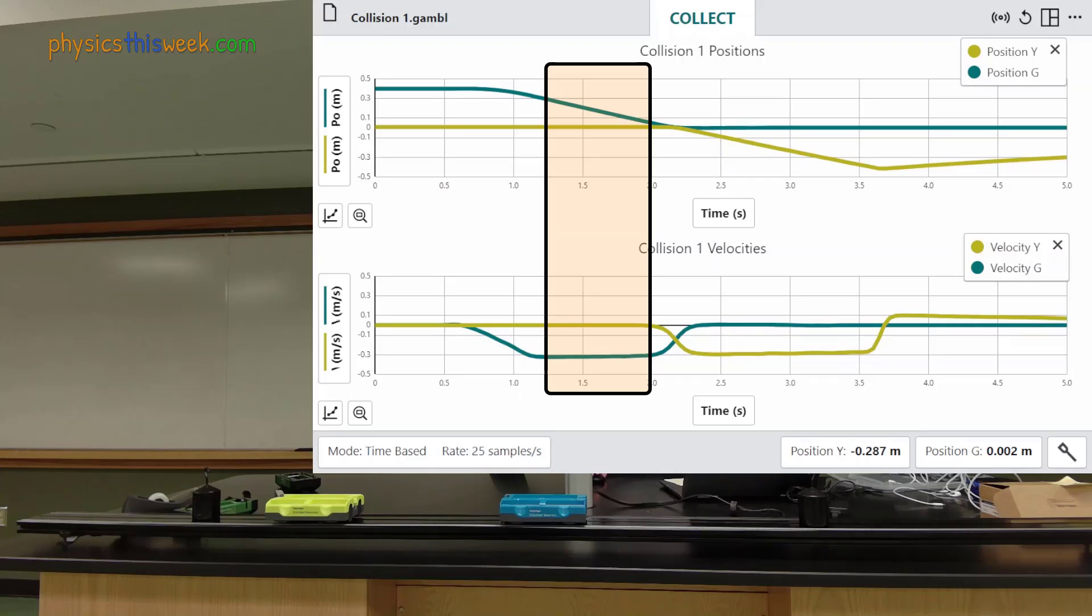It now has a nearly constant velocity. This is seen as a downward sloping line in the position graph and a horizontal line in the velocity graph. The yellow cart has been stationary this entire time so its position remains 0. Its velocity graph also stays at 0.